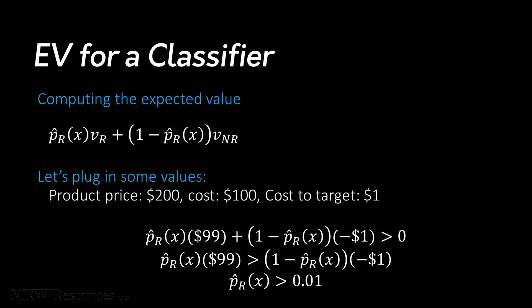Now, if we start filling in the values, we can say the price of the product is $200. The cost to create that product is $100. So we have a margin of $100 on the product itself. Next, we need to figure out how much it costs to target the consumer. If it costs us $1 to send them an offer, we can now determine the value of a response, $99, and the value of a non-response, negative $1, the $1 we spent to send them the offer.